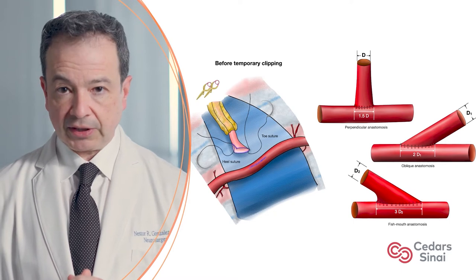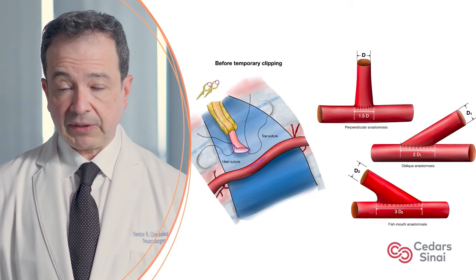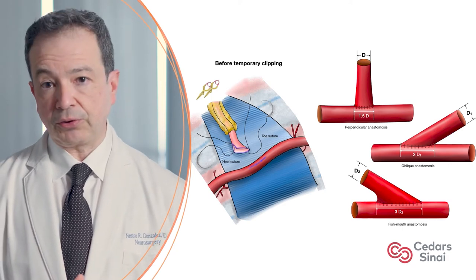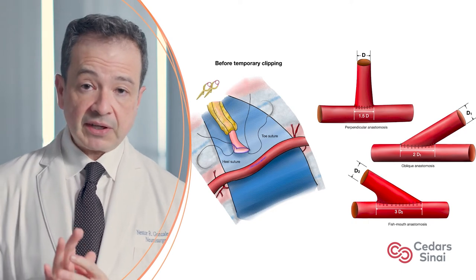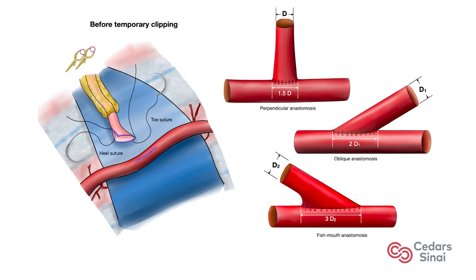Impeccable hemostasis is necessary to keep a working field with good visualization from the beginning to the end of surgery. It is very important to minimize the temporary occlusion time as much as possible. This can be achieved by preparing the donor vessels to be ready to be anastomosed — for example, by placing the toe and heel sutures in the donor artery before temporary clipping, and by freeing the recipient vessel sufficiently to prevent tension during the anastomosis. Marking the edges of the donor artery with violet helps to facilitate its visualization, and then the donor artery can be flushed with heparinized saline. Marking the recipient artery length of the arteriotomy with violet ink before occlusion would improve the visualization of the edges after the arteriotomy.